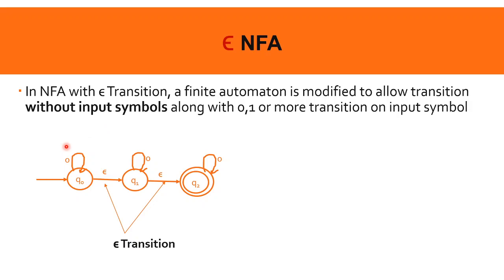NFA can accept zero, one, or more transitions on an input symbol. DFA must have exactly one transition for every input symbol — one and only one transition. This is the DFA case. NFA can have zero, one, or more transitions on an input symbol. In DFA, for input 0, exactly one state transition occurs; for input 1, exactly one transition. That's in the case of DFA.